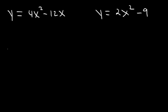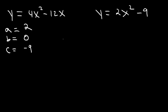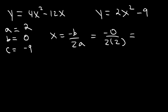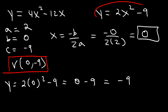For y = 2x² - 9: a = 2, c = -9, and b = 0 because there is no x term. So x = -0/(2×2) = 0. Then y = 2(0)² - 9 = -9. The vertex is (0, -9).